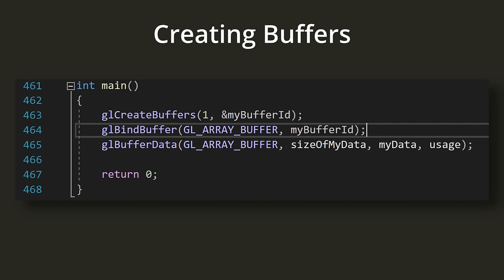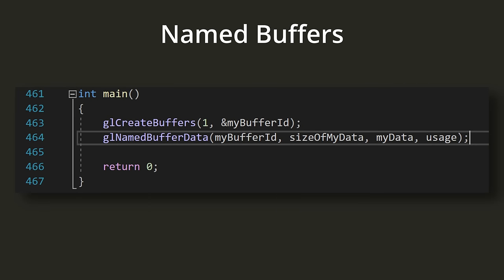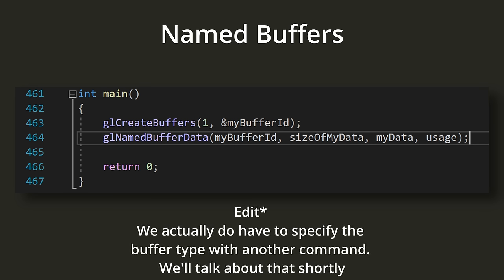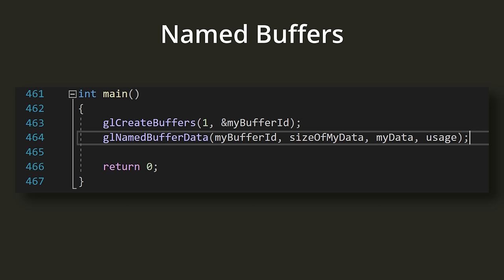There are a couple of key things to notice. First, we have to refer to the buffer by its ID — all buffer objects are tracked by a unique ID. We need to hold on to this ID so that if we ever want to modify that specific buffer, we have a way to access it. There's also a set of named commands where we refer to the object directly by its name, which is its ID — and with this version we don't have to specify the buffer type because OpenGL can implicitly infer it. This named method is a bit safer since you aren't relying on global state, but it's only available since OpenGL 4.5.